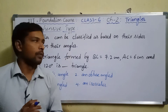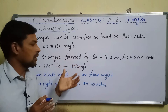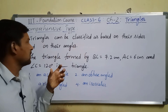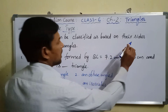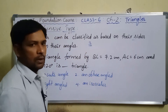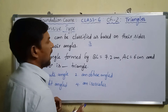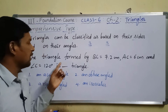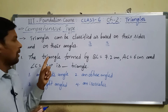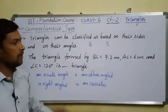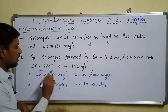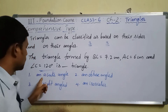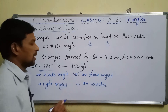Now for comprehensive type: a statement is given and questions follow. Triangles are classified by sides — equilateral, isosceles, scalene — and by angles — acute, right, and obtuse angle triangles. First question: a triangle with BC = 7.2 cm, AC = 6 cm, and angle C = 120°. Since 120° is greater than 90°, this is an obtuse angle triangle. Option two is correct.